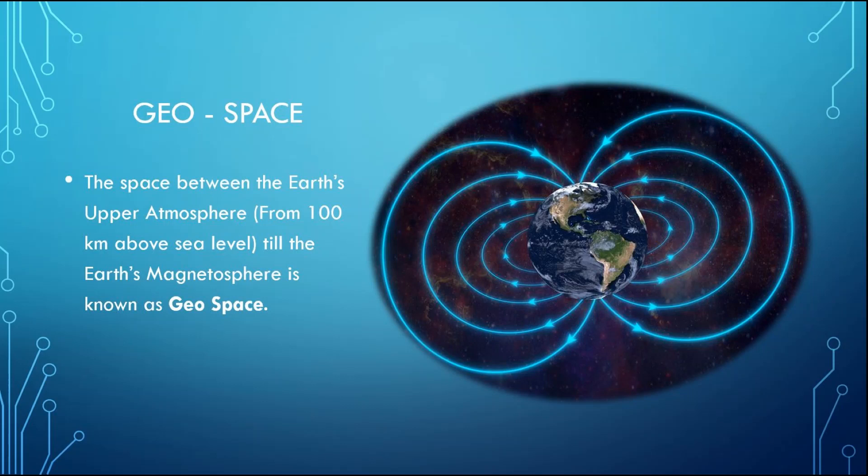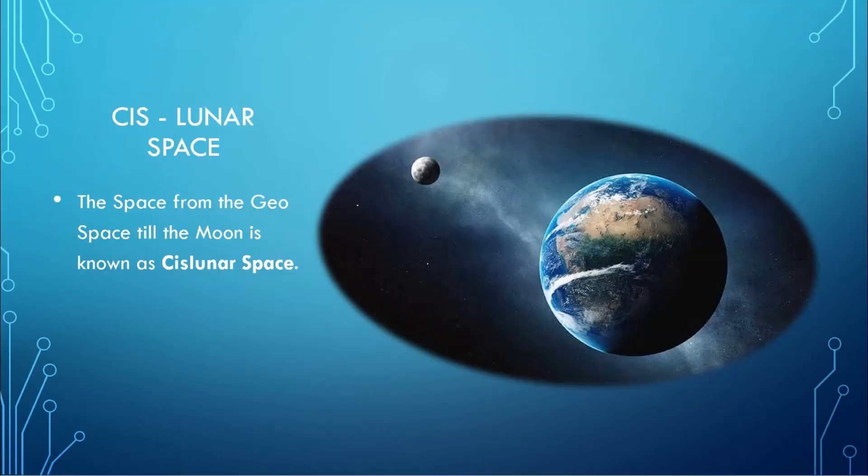So, from this point, outer space starts from there till the Earth's magnetosphere or the Earth's magnetic field locations. The geospace exists.